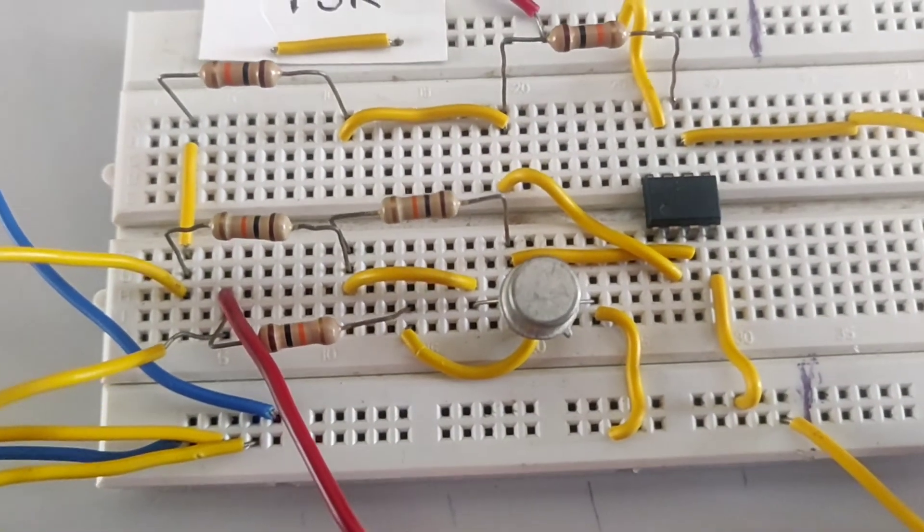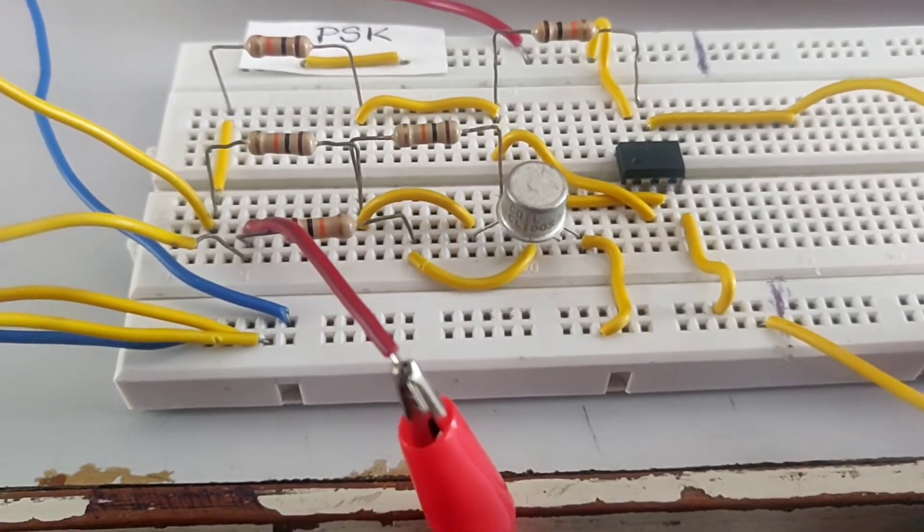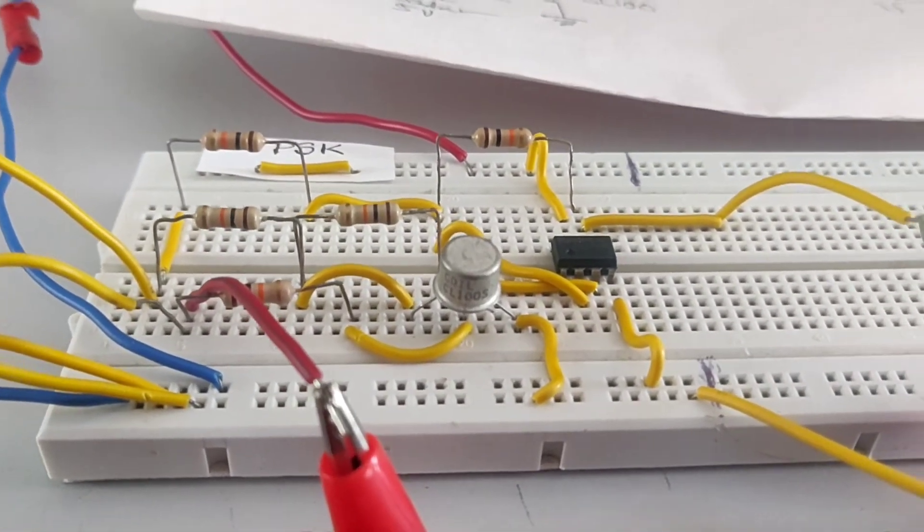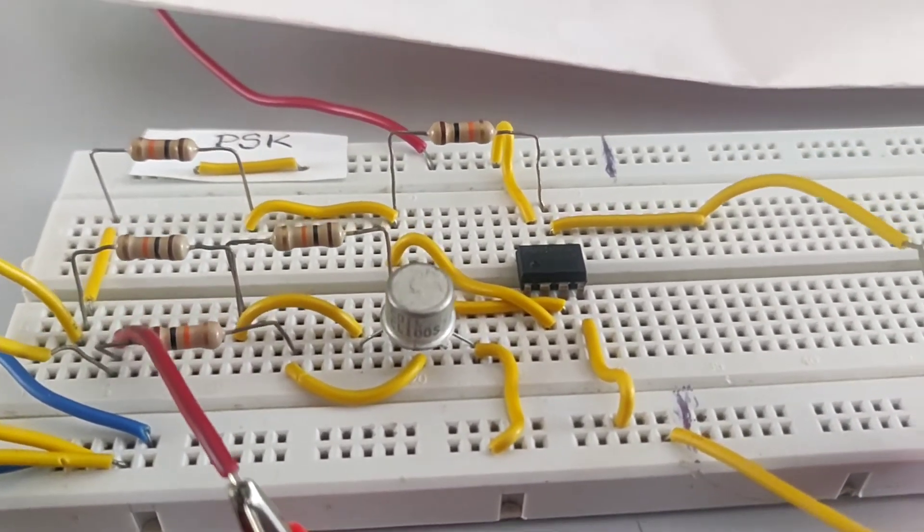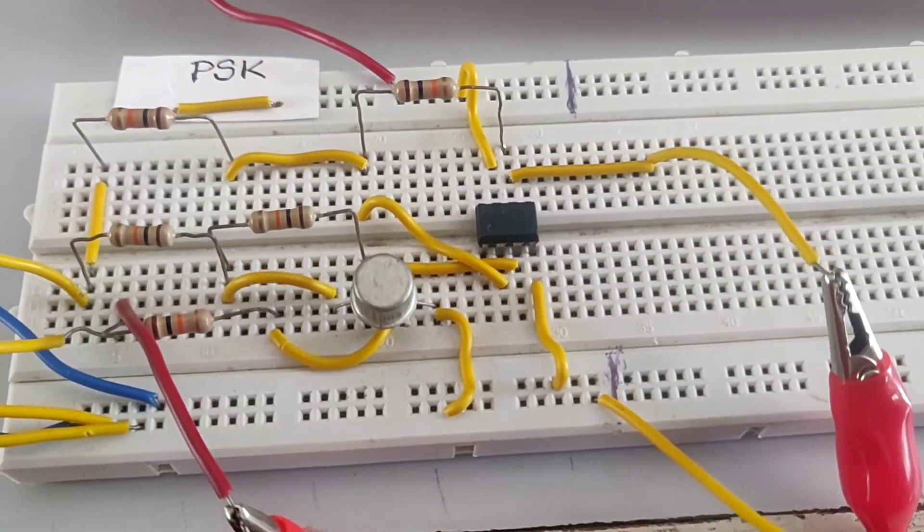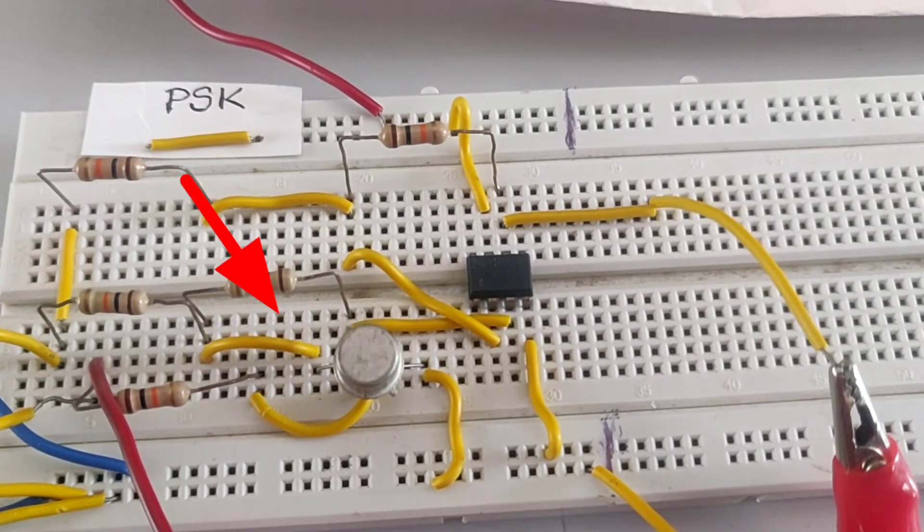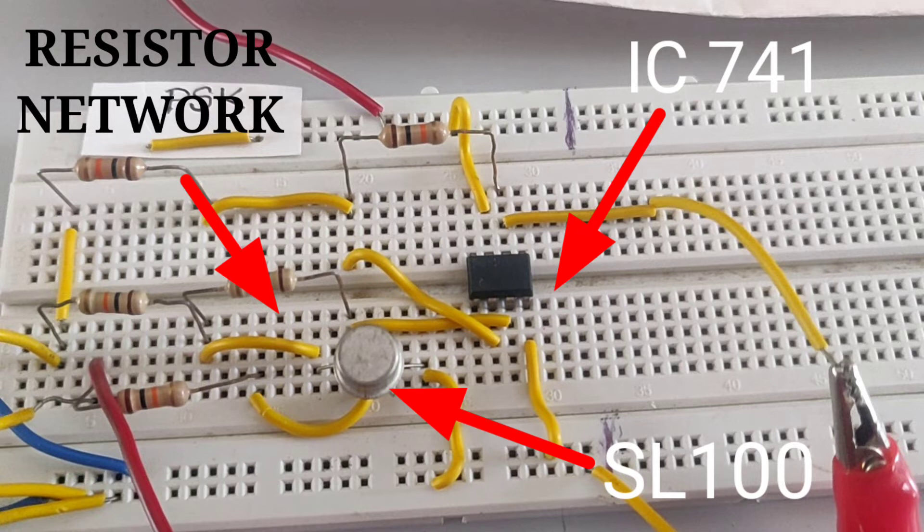See, the circuit is assembled on the breadboard as per the circuit diagram. And here you can see a resistor network, SL-100 and IC-741.